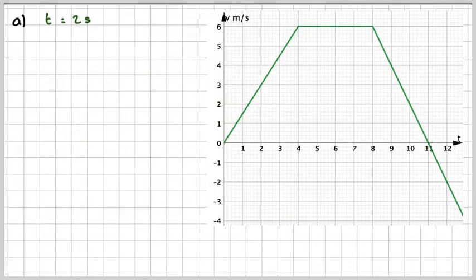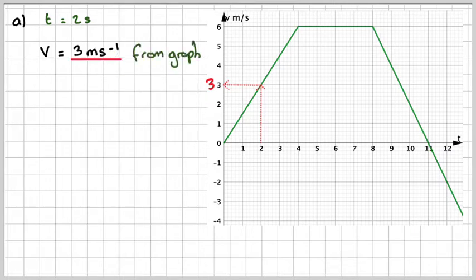When T is 2, so we find T is 2 here, drop on our graph and we realize that the velocity will be 3 meters per second. Normally we write velocity like this. That's just the answer from the graph.